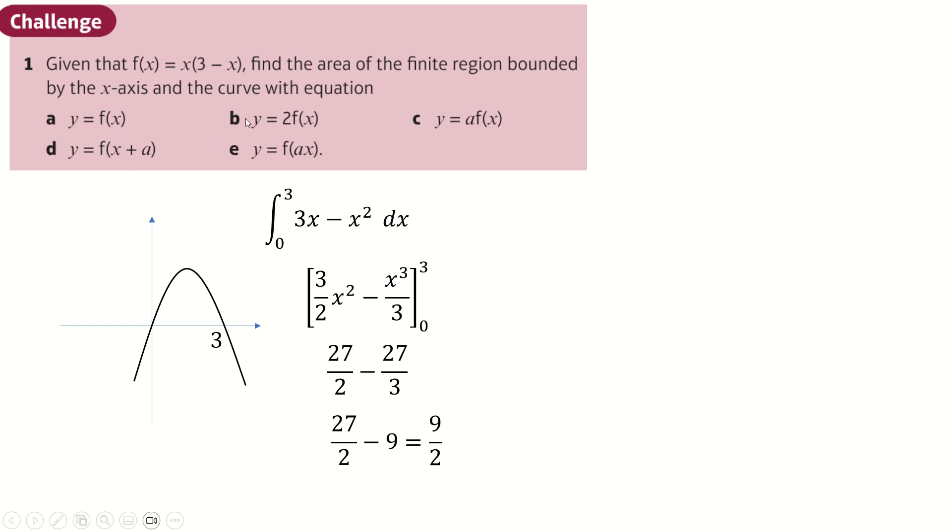We just want to think about what the graph transformations do. If you put a 2 in from the f of x, that stretches out vertically to be twice as big. Now, that doesn't actually end up mattering because all you will need to know is that we're integrating 2f of x. And like I said with the one before when you could just take the 8th out, integration doesn't care about constants. You can just take the 2 out. And we already know the integral between 0 and 3 of fx is 9 over 2. So this is just 9 over 2 times 2, which is 9.